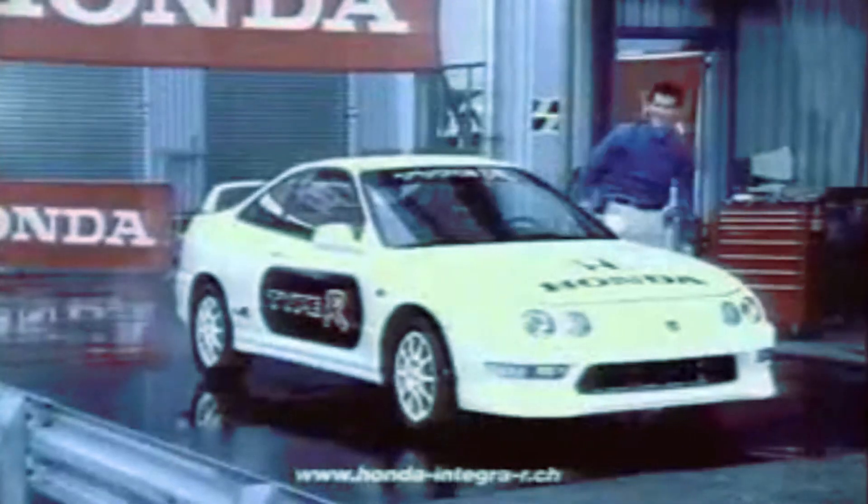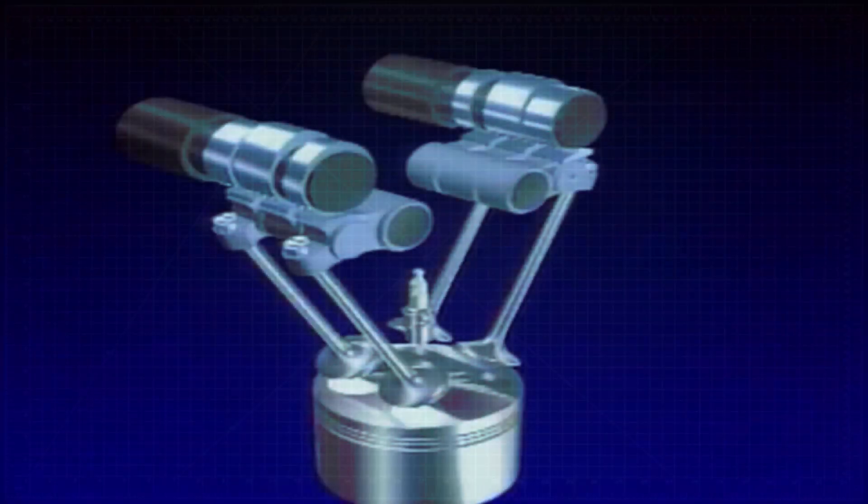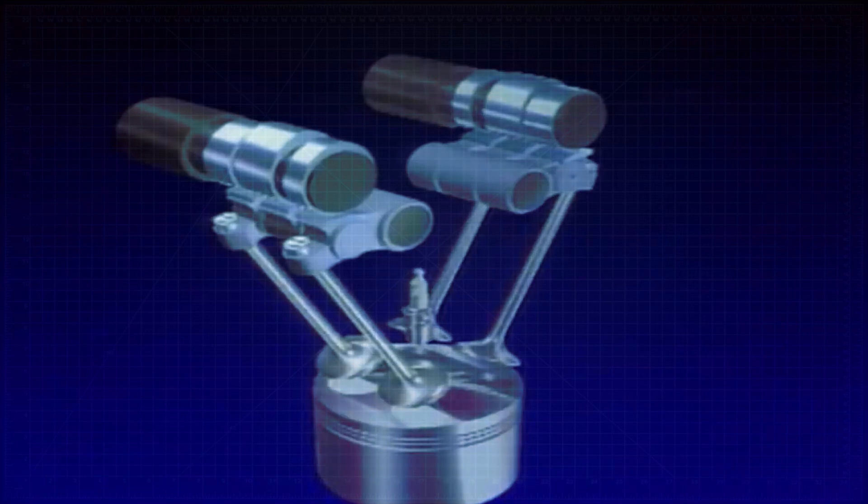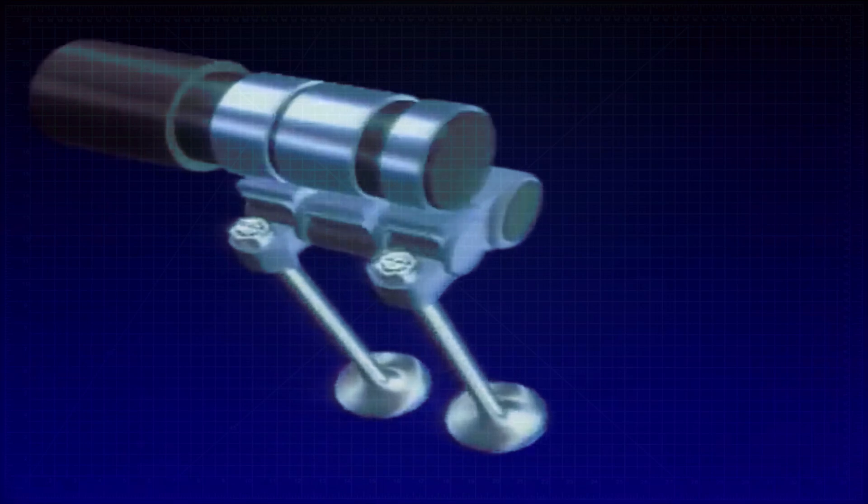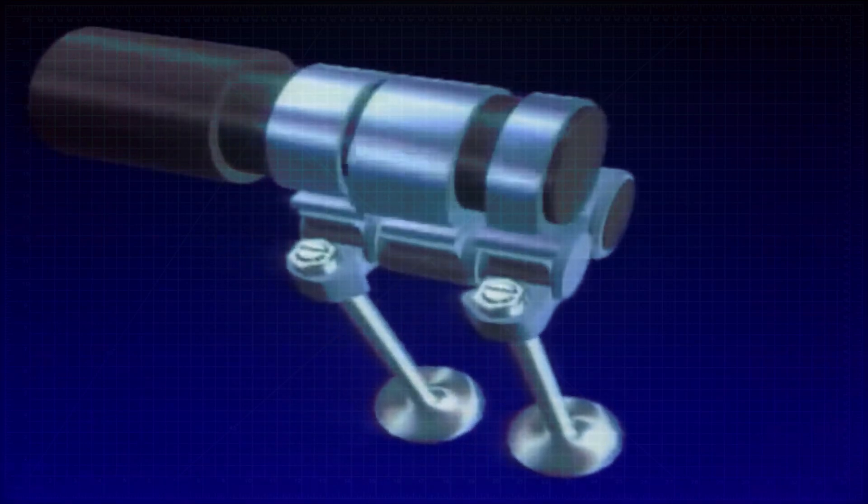Let's shift our focus and understand the principle behind VTEC and how it works exactly. In this explanation, we will use a dual overhead cam engine and focus on one pair of valves, since the operation is identical to the others. Normally, an engine would have two rocker arms for the two valves shown.